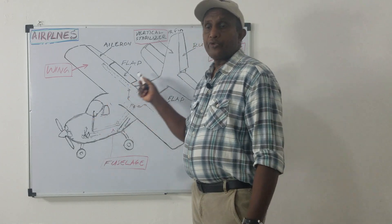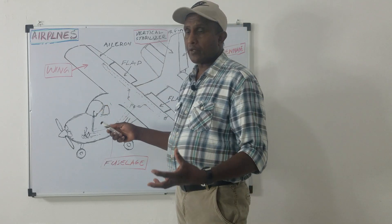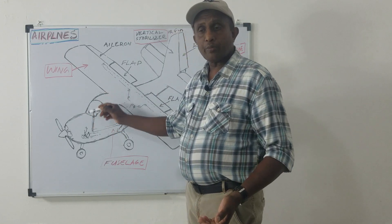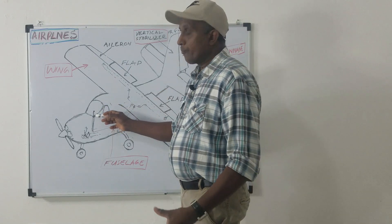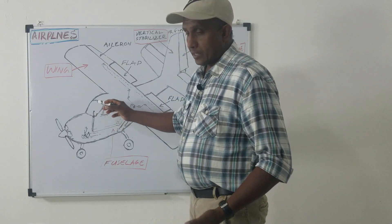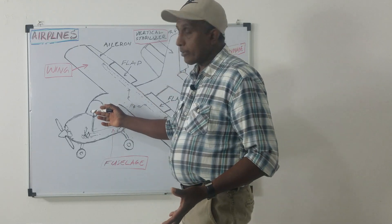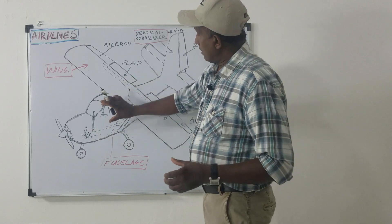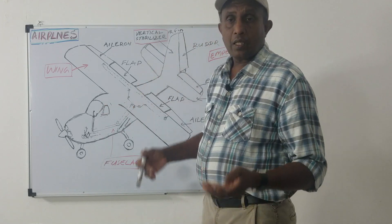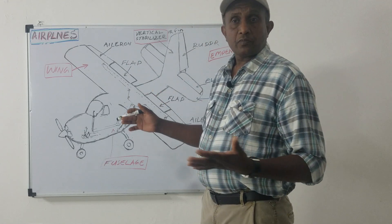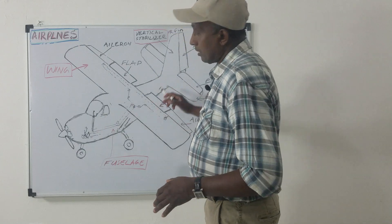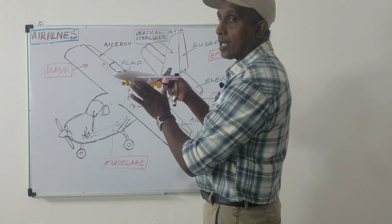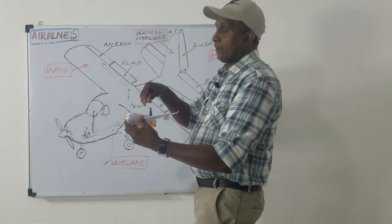The fuselage serves several functions. Besides being a common attachment point for the other major components, it provides space for the cockpit where the flight crew operates the aircraft, and a cabin area for passengers or cargo. When the aircraft is meant to carry passengers, the cabin is especially equipped with seats, galleys, and lavatories. In this configuration, cargo and baggage are placed in a dedicated cargo area or pit in the lower part of the fuselage.